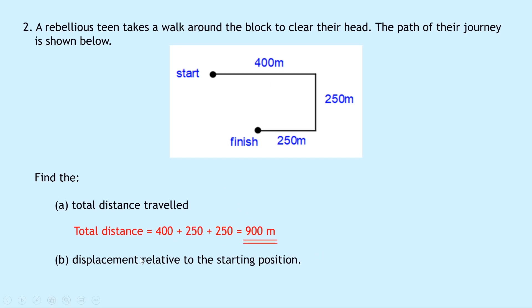Part B though is not as straightforward because they're asking for the displacement relative to the starting position. So what we want to find out here is the shortest distance from the start to the finish point and a direction. So the direction is going to be a bit trickier than in question 1 because we're not just dealing with a straight line along one of the compass directions. One way to do this would be to draw a scale diagram.